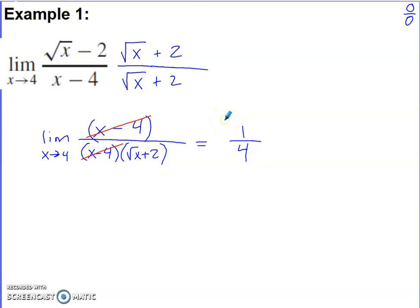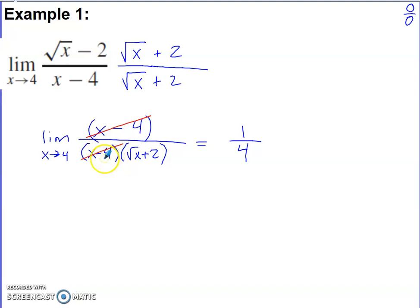One thing that can push you off track is if you also FOIL out the denominator. That's not necessarily wrong algebraically, but it's not beneficial — we want cancellation. We prefer the denominator to stay written as multiplication so we can cancel the entire numerator with the factor of x minus 4 in the denominator. Putting 4 in place of the remaining x gives square root of 4 plus 2, which is 4. There's really a 1 holding the place of the numerator, so the answer is 1/4.